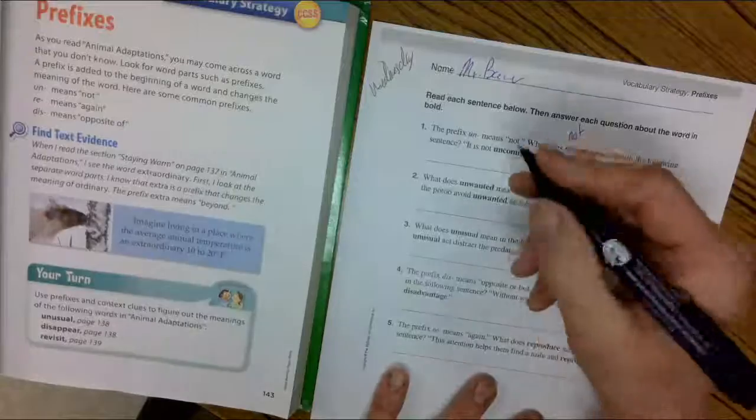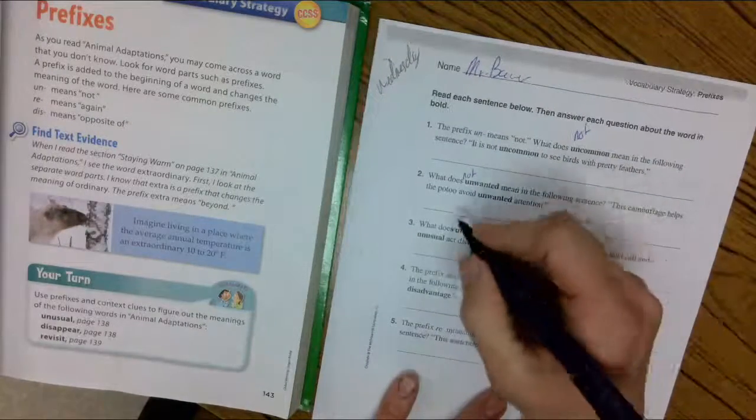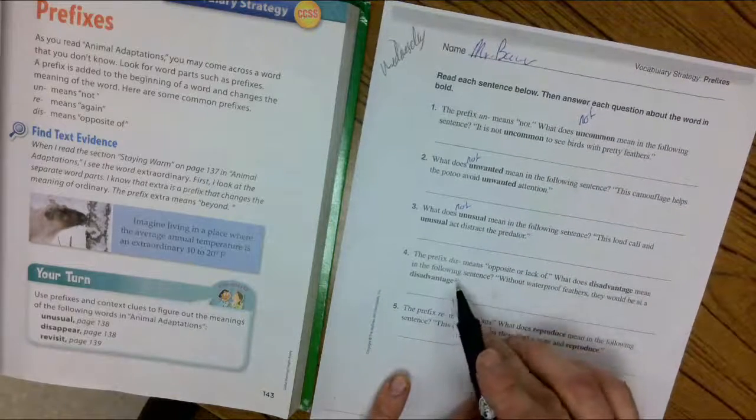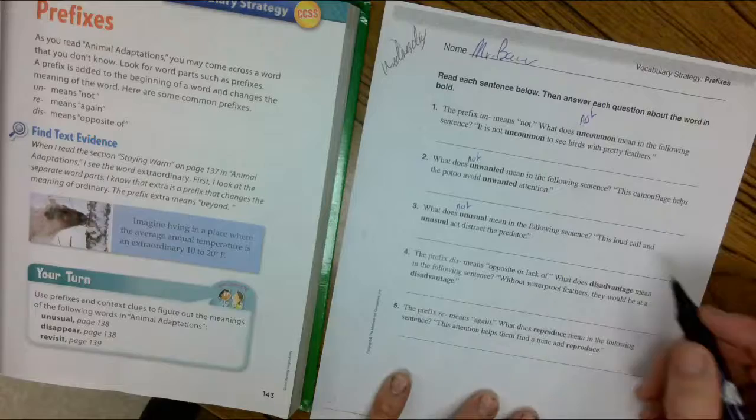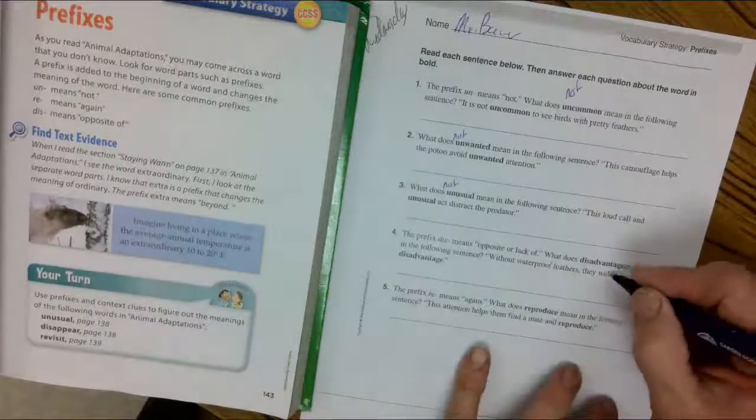Un means—unwanted means not wanted. Unusual means not usual. Here, the dis means the opposite of, the lack of. Disadvantage means that you are not advantaged.